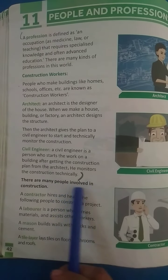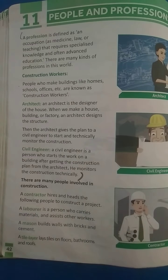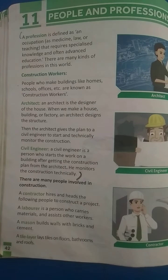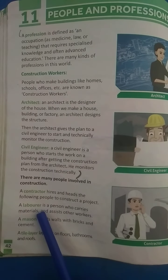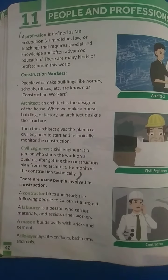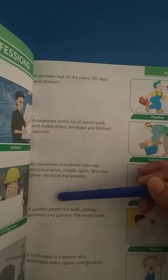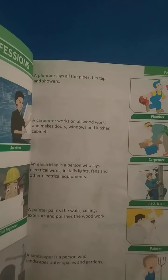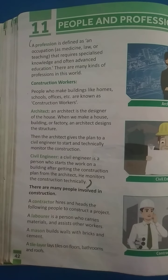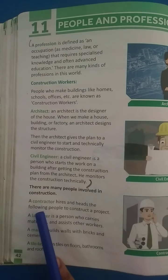There are many people involved in construction. A building cannot be built by a single person only. We require many people to complete building work, like a contractor, laborer, mason, tile layer, plumber, carpenter, electrician, painter, and a landscaper. Let's study what these people do to complete a building.